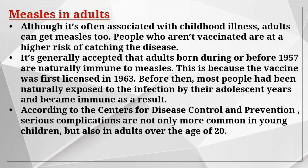Although measles is often associated with childhood illness, adults can get measles too. People who are not vaccinated are at higher risk of catching the disease. It is generally accepted that adults born during or before 1957 are naturally immune to measles, because the vaccine was first licensed in 1963. Before then, most people had been naturally exposed to the infection. Serious complications are not only more common in young children but also in adults over the age of 20.